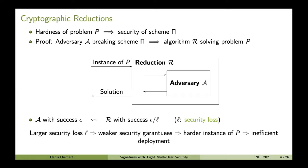So when we want to prove the security of some scheme π, let's say a signature scheme, we first need to define a security model. Then we usually pick some problem P which is assumed to be hard, and show that if problem P is hard, then our scheme π is secure. In the proof, we take an adversary A breaking our scheme π and construct from this adversary an algorithm R, which we call a reduction, that solves our problem P.